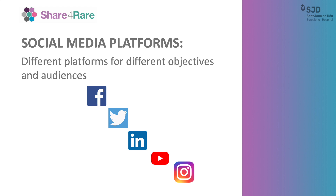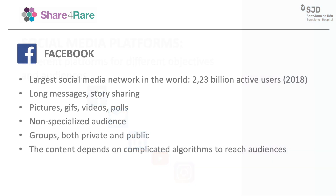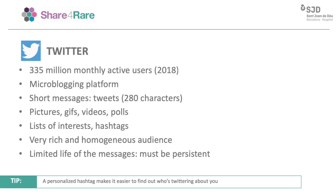There are different kinds of social networks that can be used to reach our target audience — patients, industry, researchers. Facebook is the most famous and most used social network in the world, normally used by people older than 25. You can post long messages and add videos, pictures, and other media files, tag other profiles, and even create polls. The audience you can reach through Facebook is usually non-scientific and non-medical: parents, patients, caregivers. The language tends to be informal and simple, and private groups are of great interest for patient organizations.